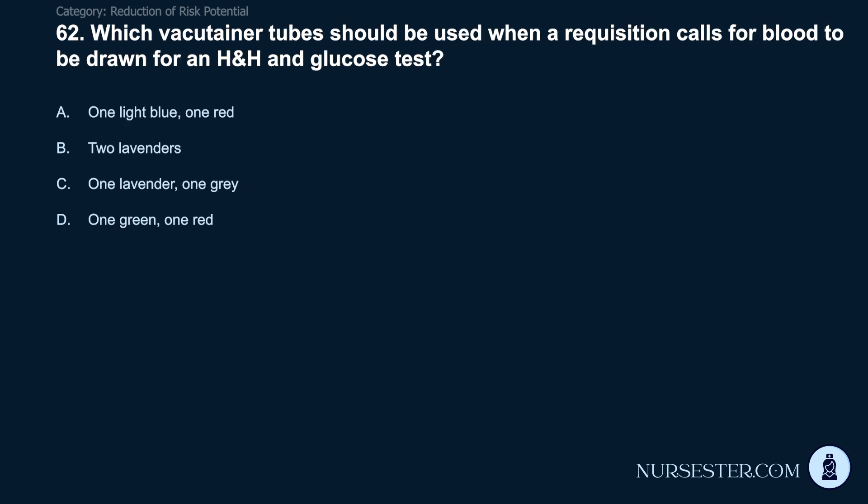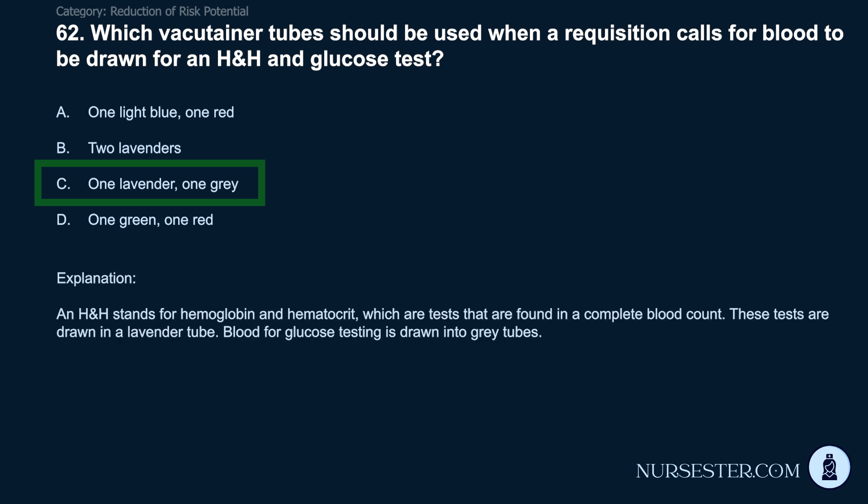Question 62: Which vacutainer tubes should be used for an H&H and glucose test? A) 1 light blue, 1 red. B) 2 lavenders. C) 1 lavender, 1 gray. D) 1 green, 1 red. Correct answer: C. 1 lavender, 1 gray. H&H stands for hemoglobin and hematocrit, tests found in a complete blood count drawn in a lavender tube. Blood for glucose testing is drawn into gray tubes.